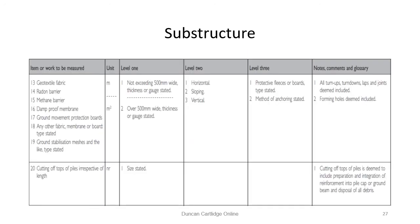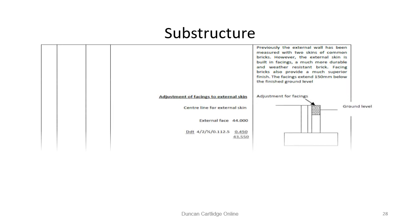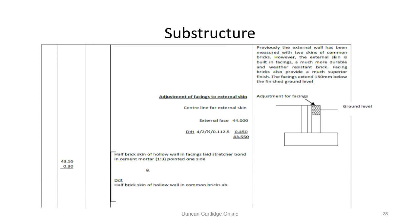Damp proof membranes are measured in section 5, excavating and filling on page 138. Also here is another example of the incorrect use of dotted lines. You will recall that we measured two skins of common brickwork on page 21. We must now adjust this to take account of the two courses of facework needed on the external face, as explained earlier.